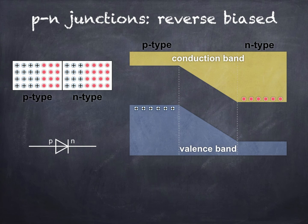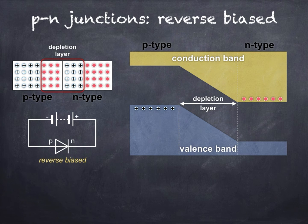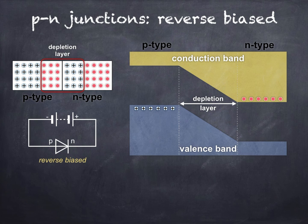To reverse bias the P-N junction, we connect the negative terminal of a battery to the P-type side and the positive terminal to the N-type side. This has the effect of widening the depletion layer, and when looking at the energy band model, the slope in the depletion layer is far steeper. When the P-N junction is reverse biased, the depletion layer has become a greater barrier to the movement of electrons from N-type to P-type and holes from P-type to N-type. There's almost no conduction, apart from a very small current known as the reverse leakage current due to the motion of minority charge carriers.